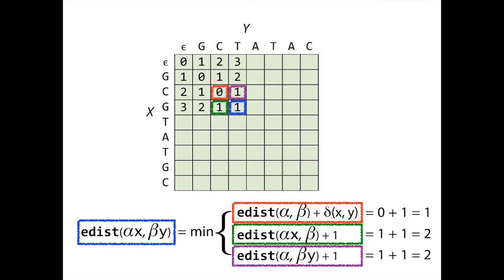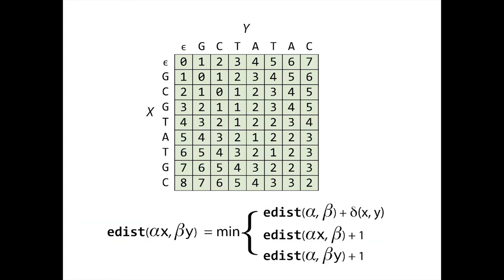That's how we fill in the cells of the matrix. For the first row and first column, we note that the edit distance between the empty string and some other string always equals the length of that other string. So we initialize the first column with ascending integers 0, 1, 2, 3, 4, 5, etc., and likewise the first row with 0, 1, 2, 3, 4, 5, etc. With all elements filled in, the matrix tells us the edit distance between the two strings — it's simply the value in the lower right-hand corner, which in this case is 2.